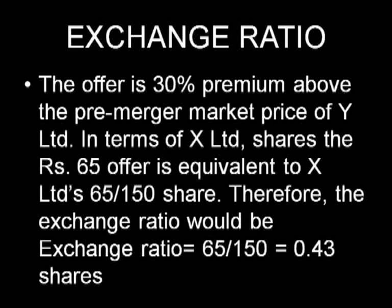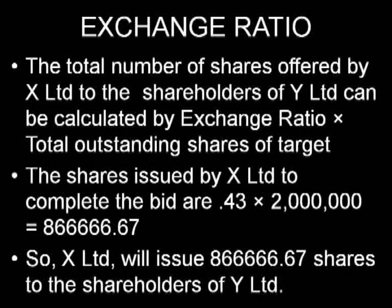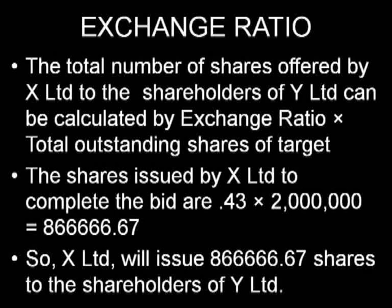The total number of shares offered by X to the shareholders of Y is calculated using the exchange ratio. With 2 million shares of Y multiplied by the exchange ratio of 0.43, we get 866,667 shares which will be outstanding. These shares will be transferred from Y to X. This is known as the shareholder value exchange — shares given in lieu of what shareholders of Y hold, in exchange for shares of X Limited.